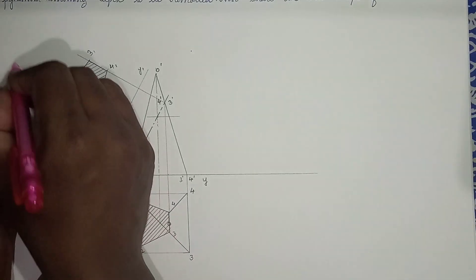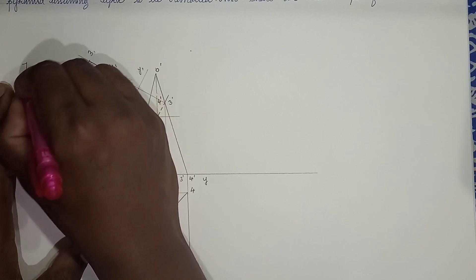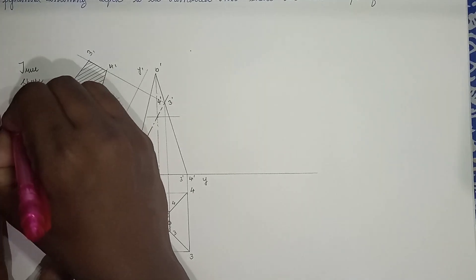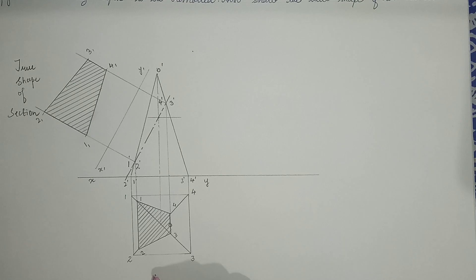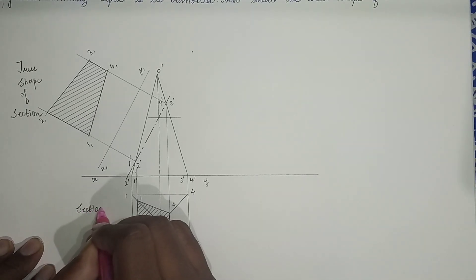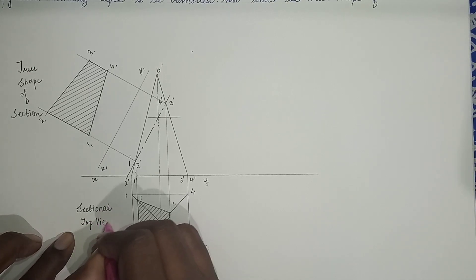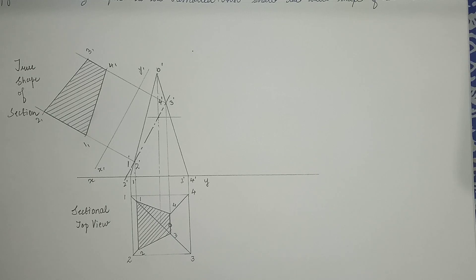So this is the true shape of the section that is obtained. This is the sectional top view. We show the true shape by hatching lines. So this is done up to this point — the sectional front view, sectional top view, and true shape of the section are complete. Now we are interested in the development part.